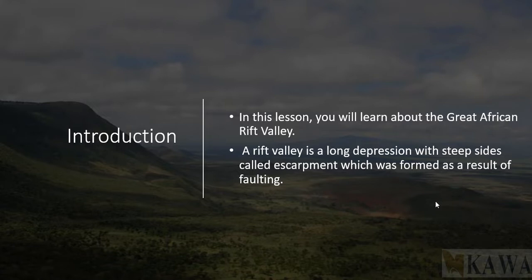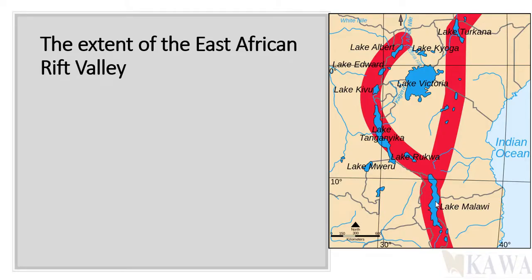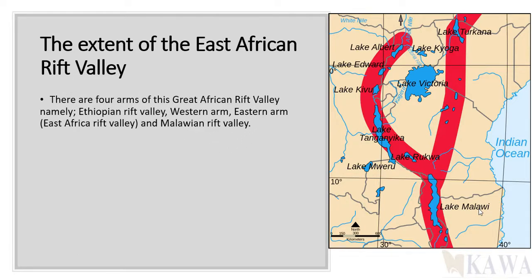Now let's look at the extent of the East African Rift Valley. You need to look at this map to see the areas it covers. Look at the atlas and be able to name these lakes. Remember this is the map of East Africa — try to trace it, try to draw it on your own. These are some of the skills you need.